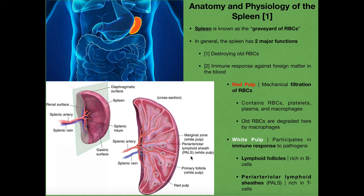There is another region of white pulp called paraarteriolar lymphoid sheaths, or PALS. This region, along with the marginal zone, is very rich in T cells. So there is a division within the white pulp: lymphoid follicles are rich in B cells, while PALS and the marginal zone are rich in T cells. Both types of white blood cells are present in the spleen, waiting for foreign material to come through, and they will mount an immune response against it.